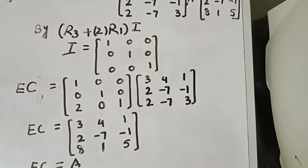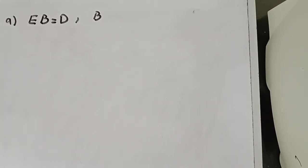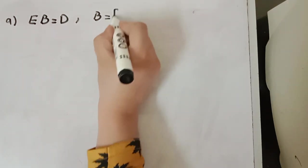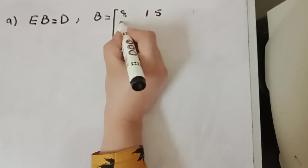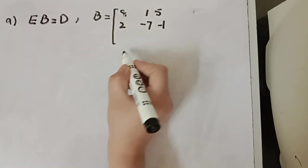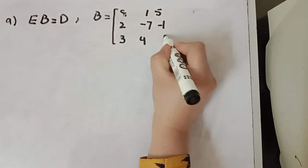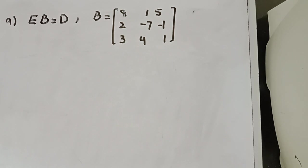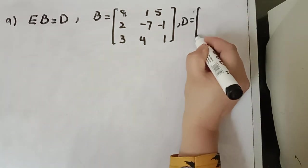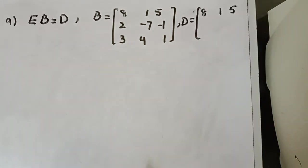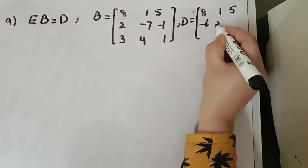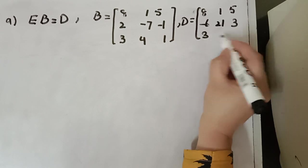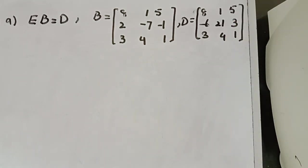Moving on to question number 8. In this part you have to verify the equation after finding the elementary matrix — the product with B equals D. Matrix B is given as: 8, 1, 5; 2, negative 7, negative 1; 3, 4, 1. And matrix D is given as: 8, 1, 5; negative 6, 21, 3; 3, 4, 1.